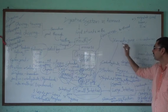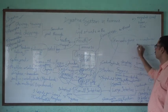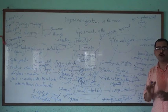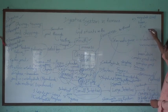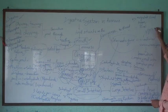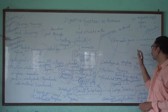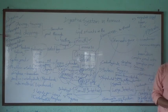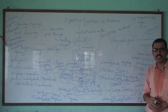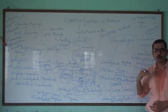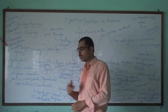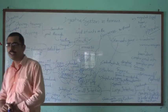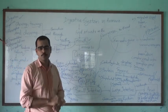Here we are secreted pancreatic juice. This pancreatic juice contains a lot of enzymes. One of the main enzymes is insulin, which will regulate the blood sugar level. When the concentration of insulin is less, it means that in our blood the level of sugar is going to increase, and such a condition is called diabetes. A person suffering from this type of anomaly is called a diabetic patient.